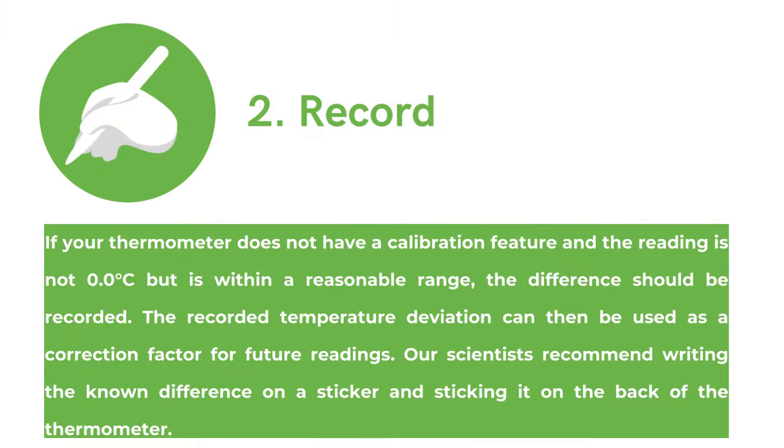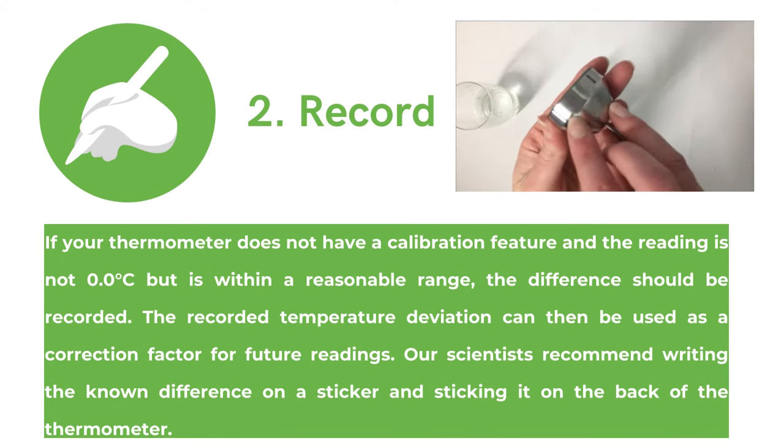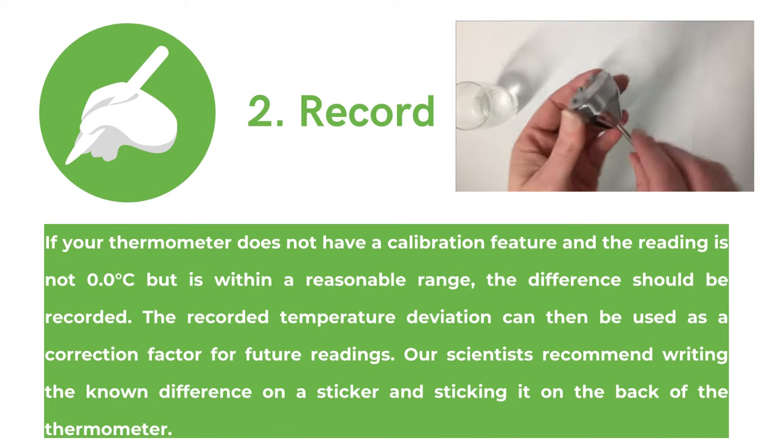The second is record. If your thermometer does not have a calibration feature and the reading is not zero but is within a reasonable range, the difference should be recorded. The recorded temperature deviation can then be used as a correction factor for future readings. Our scientists recommend writing down the known difference on a sticker and sticking it to the back of your thermometer.